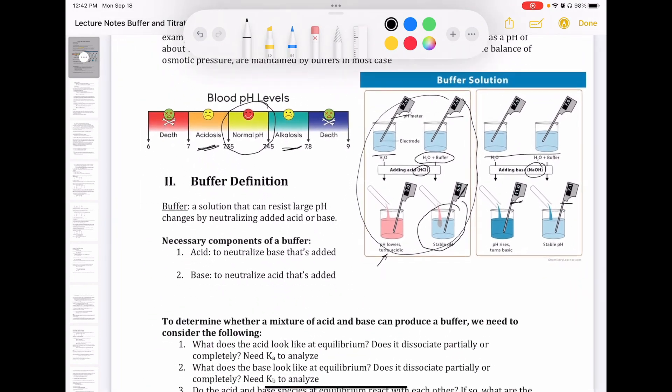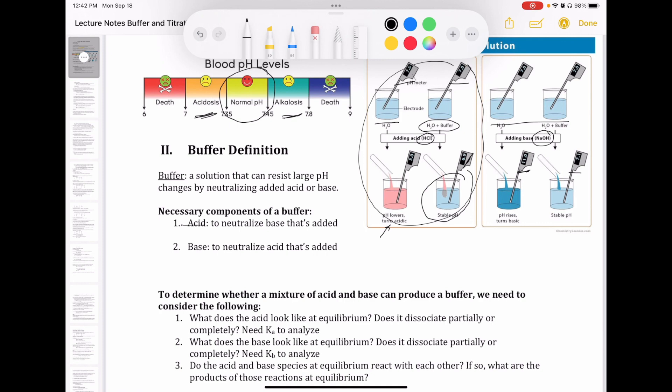And so in order for a buffer to work, we're going to need an acid in the buffer. And the purpose of having the acid is to neutralize any base that you're adding. So in that picture that I just showed you, if I'm adding NaOH, in order for my pH not to change dramatically, I'm going to need to have something in my solution that will neutralize that NaOH.